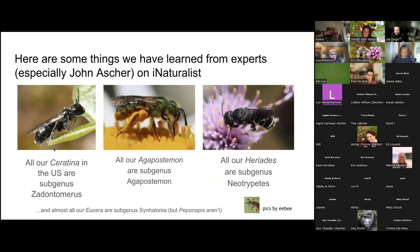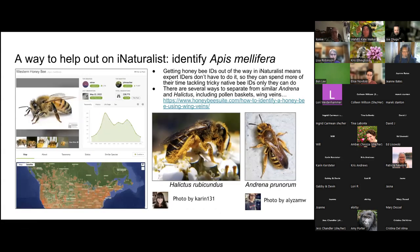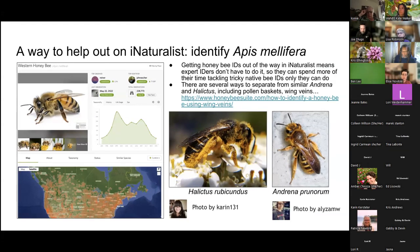John Asher has pointed out that in some cases computer vision will suggest Ceratina, but in our locality they're all Zadontomerus. That's also true for some other bees — they're all in a specific subgenus. If you don't recognize the name, that's where it's coming from. We don't exclude honeybees from iNaturalist overall — there are tons of honeybees on iNaturalist. When experts ID them, they spend time that could be used for trickier bees. So for somebody who's a relative beginner at IDing, getting really good at identifying honeybees is a way you can help out.